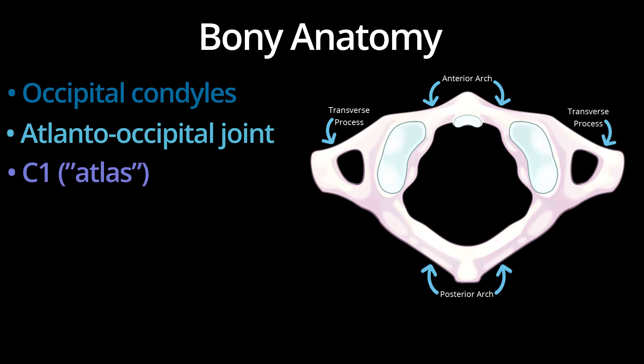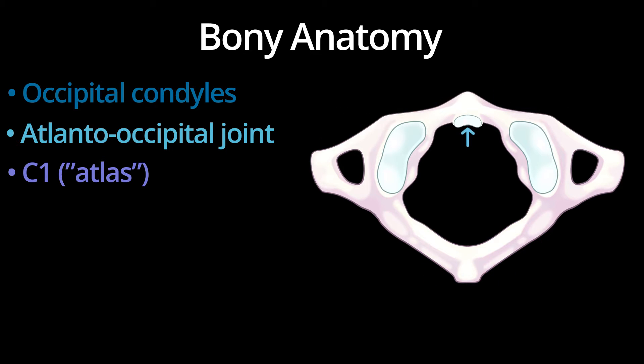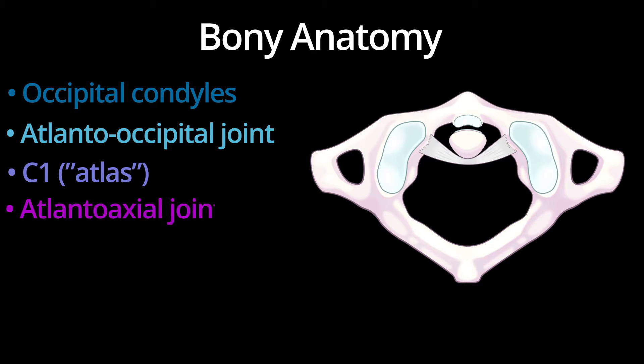Anteriorly, C1 has an articular surface that allows for articulation with the dens of C2 to form part of the atlanto-axial joint. The transverse foramen contain the vertebral arteries.